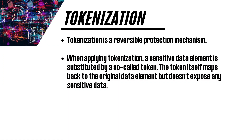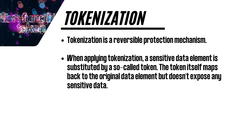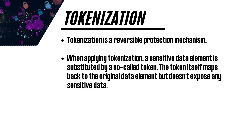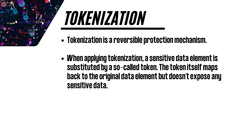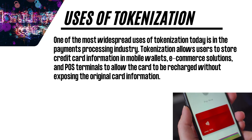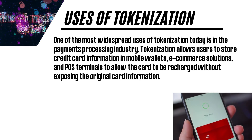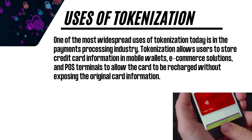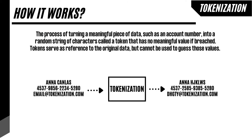Tokenization is a reversible protection mechanism. When applying tokenization, a sensitive data element is substituted by a so-called token. The token itself maps back to the original data element but doesn't expose any sensitive data. One of the most widespread uses of tokenization today is in the payments processing industry. Tokenization allows users to store credit card information in mobile wallets, e-commerce solutions, and POS terminals to allow the card to be recharged without exposing the original card information. It is the process of turning a meaningful piece of data, such as an account number, into a random string of characters called a token that has no meaningful value if breached. Tokens serve as a reference to the original data but cannot be used to guess those values.